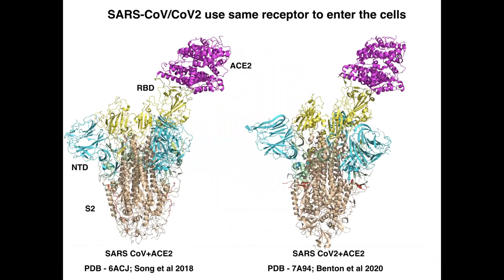The first SARS virus in 2003 and the current virus SARS-CoV-2 both use the same cell surface receptor called ACE2 to enter the cell. However, SARS-CoV-2 is much more infectious.